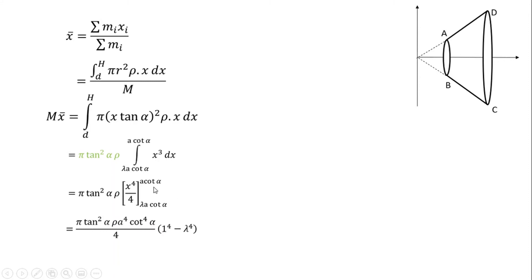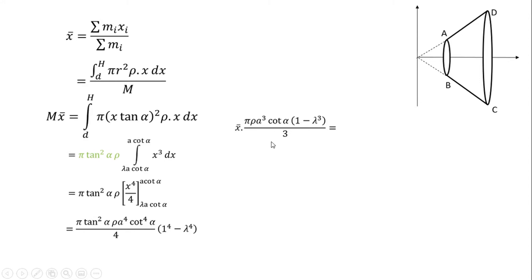We have a to the power 4, a to the power 4. So we are going to have 1 to the power 4 minus lambda to the power 4. Next, we will cut tan and cot alpha. We will put m to the power 4, so x bar into m to the power 4 — we will put h. So x bar into 1 minus lambda to the power 4.